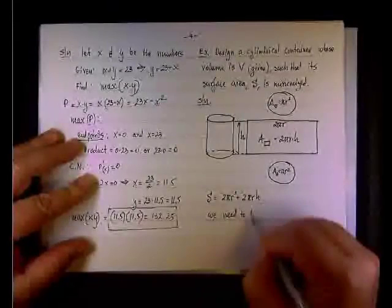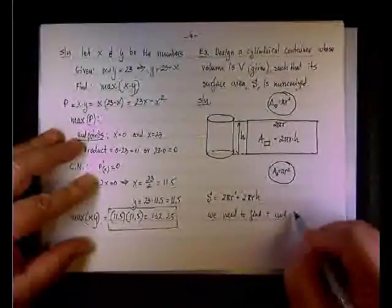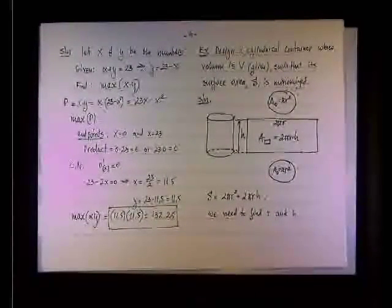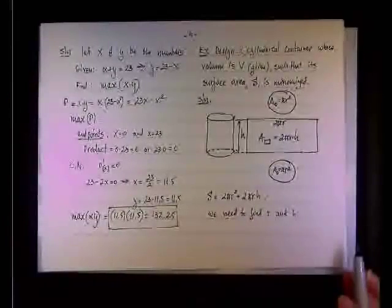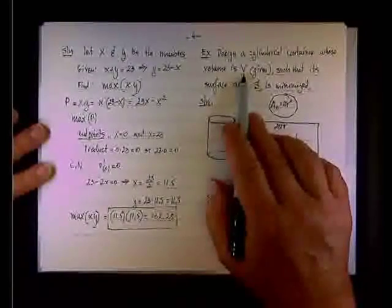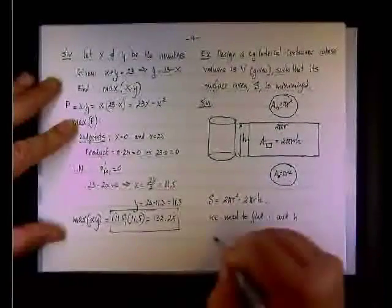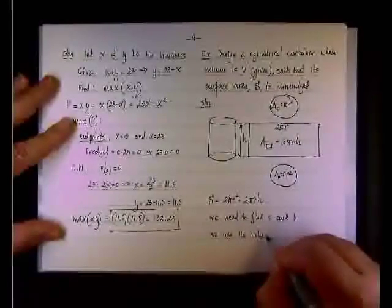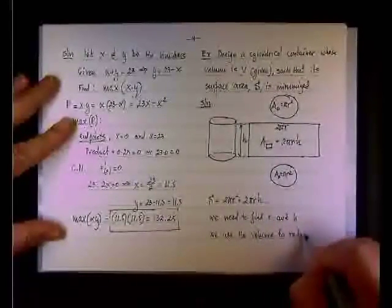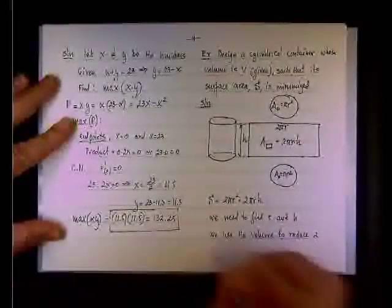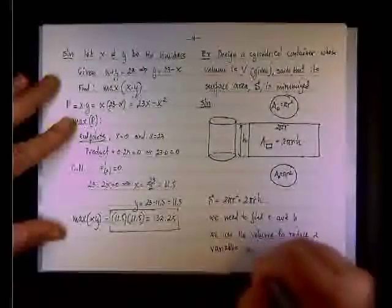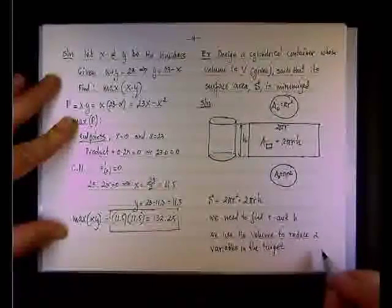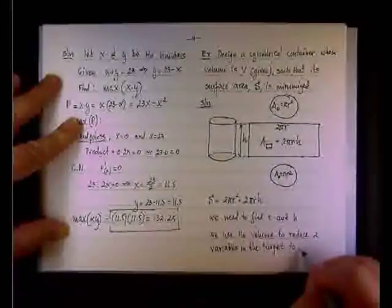We need to find r and h. But right now as it stands, we want a single variable function. So we need to substitute one variable with the other. And the way to do it is we're going to use the volume. We use the volume to reduce two variables to one in the target function.